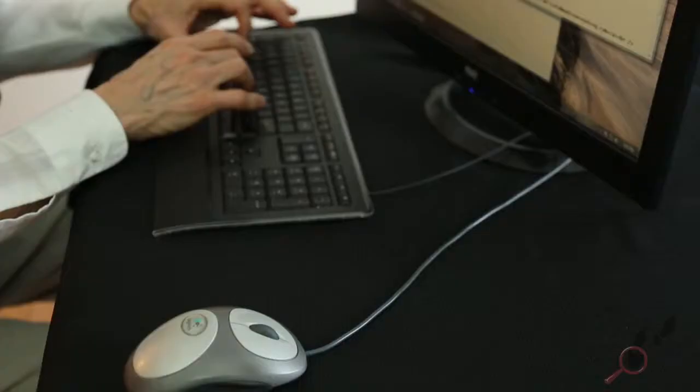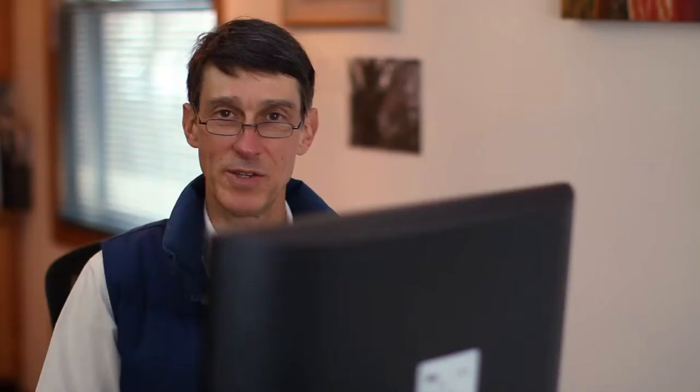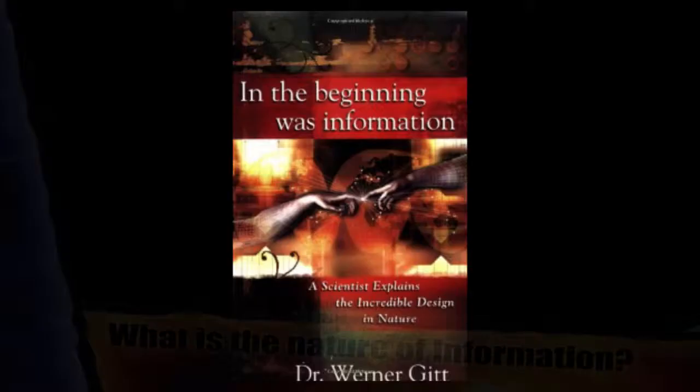Fundamental to understanding programming is understanding the nature of information. Information theorist Dr. Werner Gitt, in his book titled In the Beginning Was Information, says that information, wherever it is found, is in five levels.